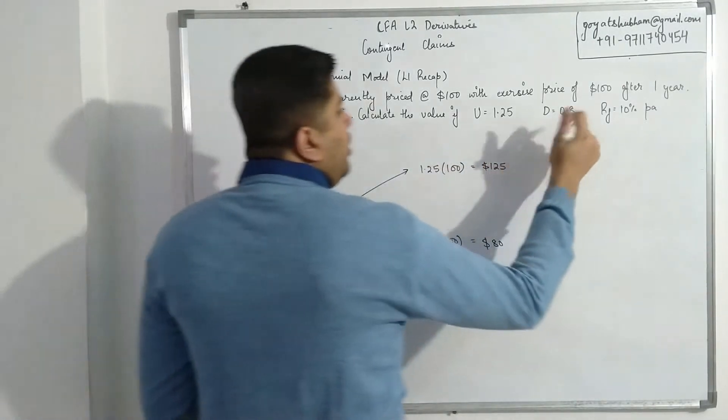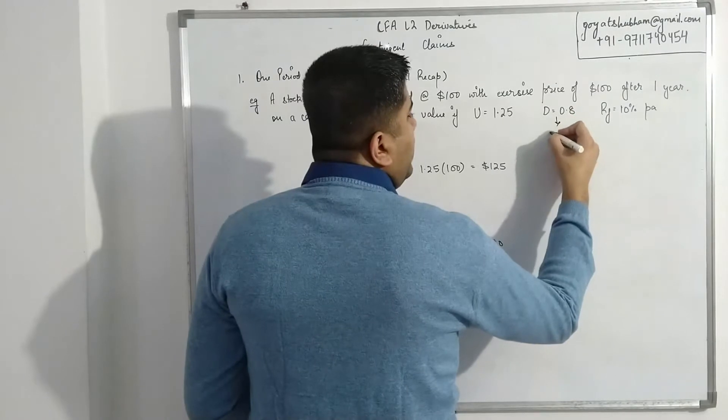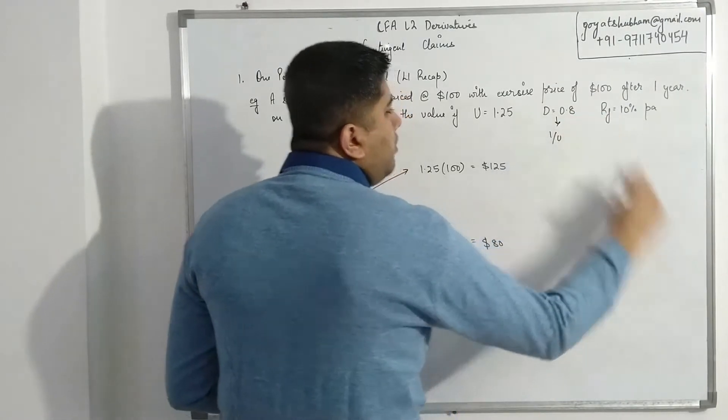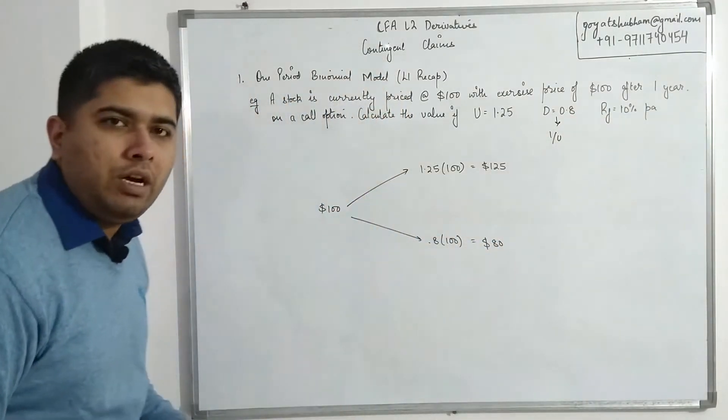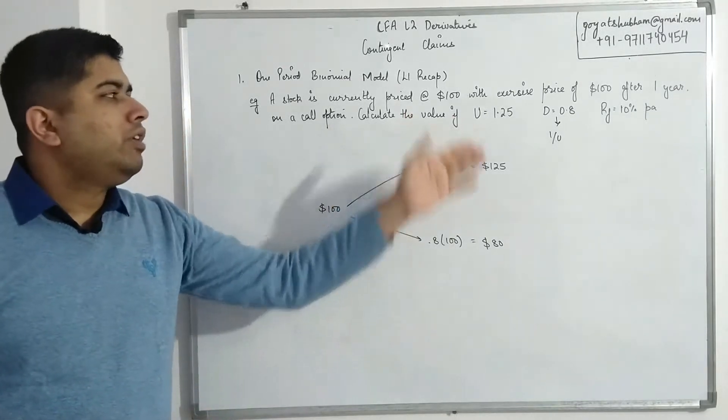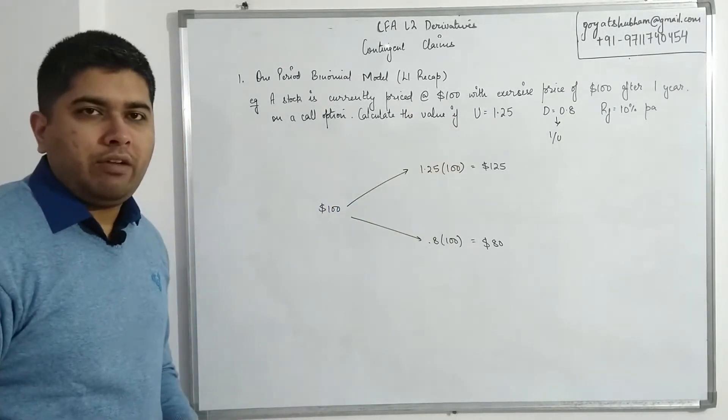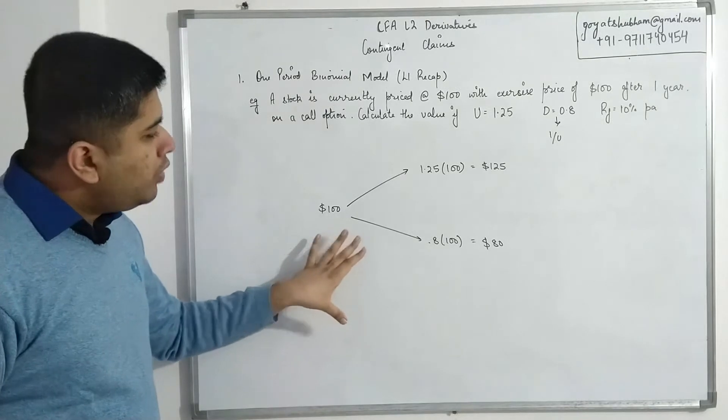Size of down move at Level 1 was calculated as 1 divided by size of up move. So if my up move is 1.25, 1 divided by 1.25 will give me the 0.8 value that we have here.